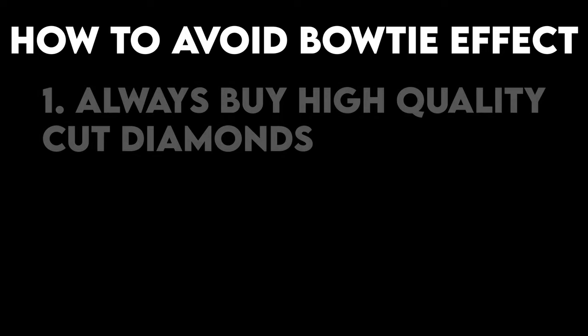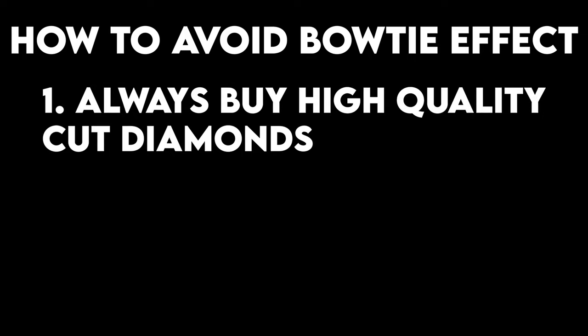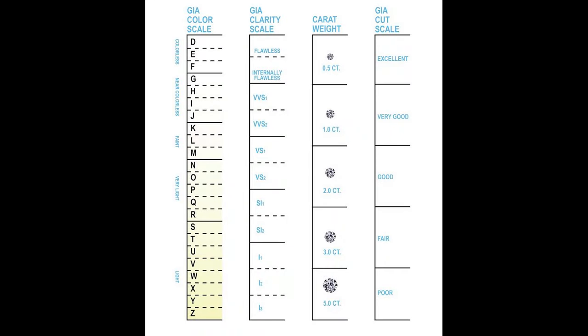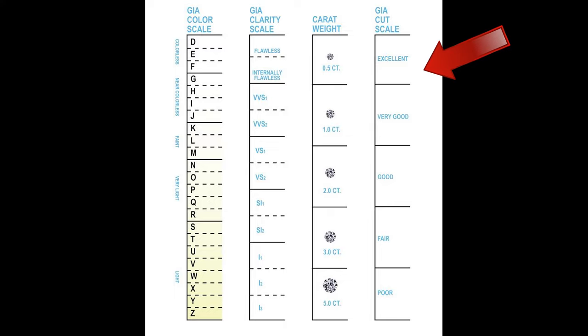So that brings us to our third and most important point: how do you avoid having this effect in your diamond? There are three simple things you can do. Number one, always make sure you get the best cut grade possible when buying oval, marquee, or pear cut stones. Diamond cuts are graded from poor all the way up to excellent — I strongly recommend never going below very good cut. If you have a diamond that is very good cut and very good symmetry or better, the chances that you will eliminate the bowtie effect gets much better.